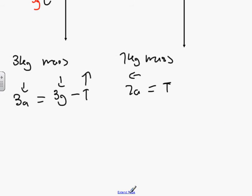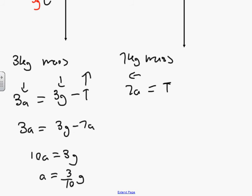Now we replace T with 7a, so we get 3a equals 3g minus 7a, 10a equals 3g, a equals 3 over 10g. Anybody happy with that?